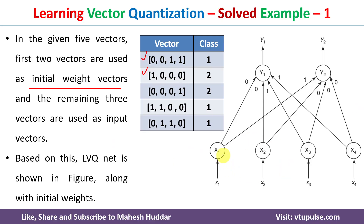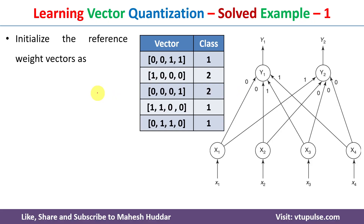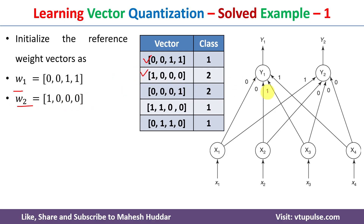Each vector contains four components, so we have x1, x2, x3, and x4 as the input nodes. There are two classes, so we have y1 and y2. y1 corresponds to the first vector and y2 to the second vector — the initial weight vectors. The initial weights are: w1 = [0, 0, 1, 1] and w2 = [1, 0, 0, 0], represented in the network accordingly.